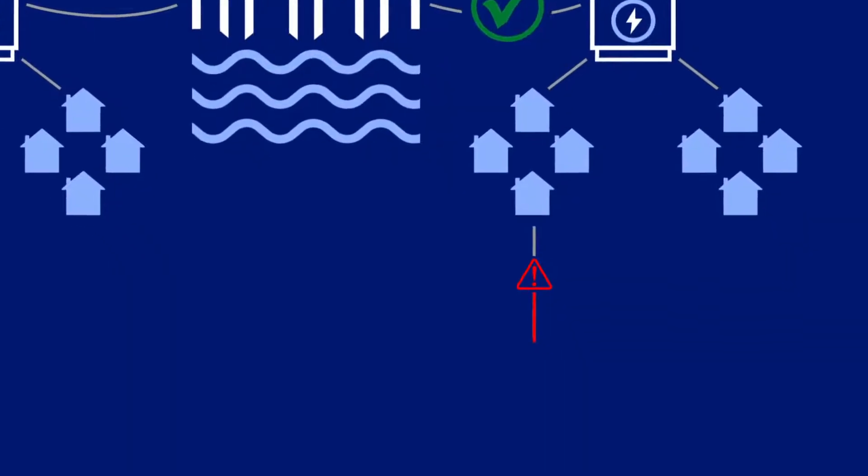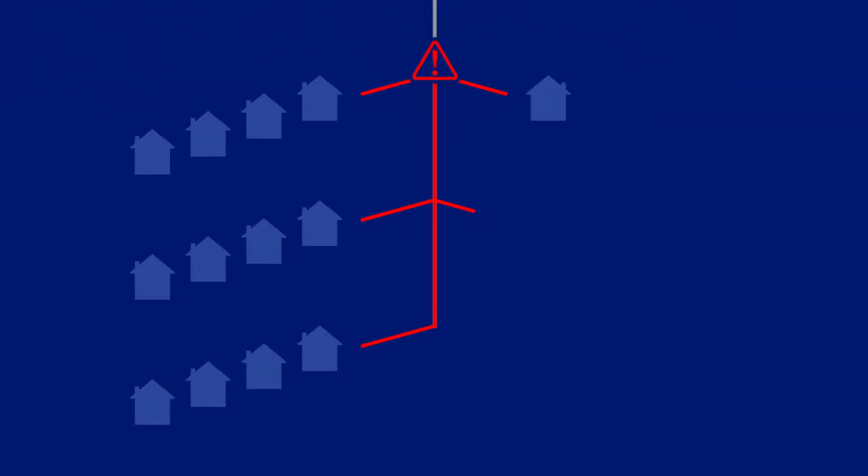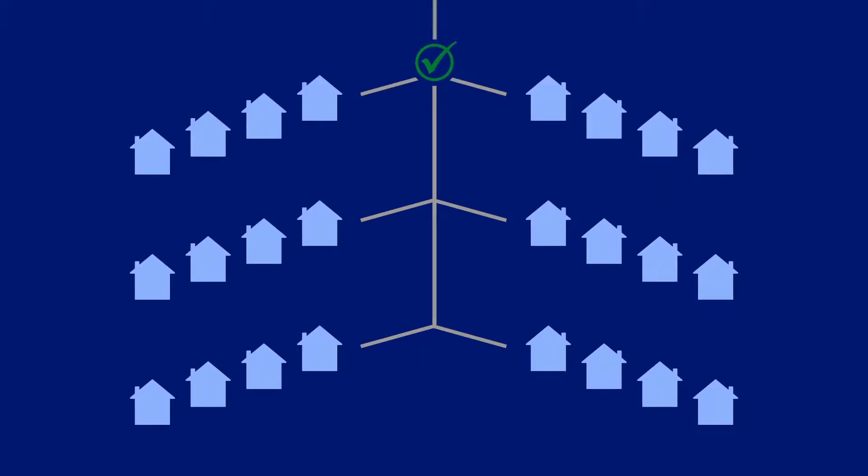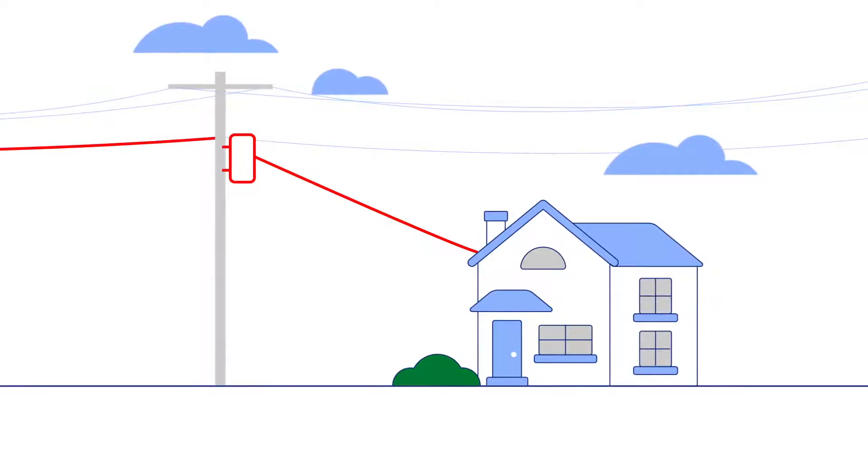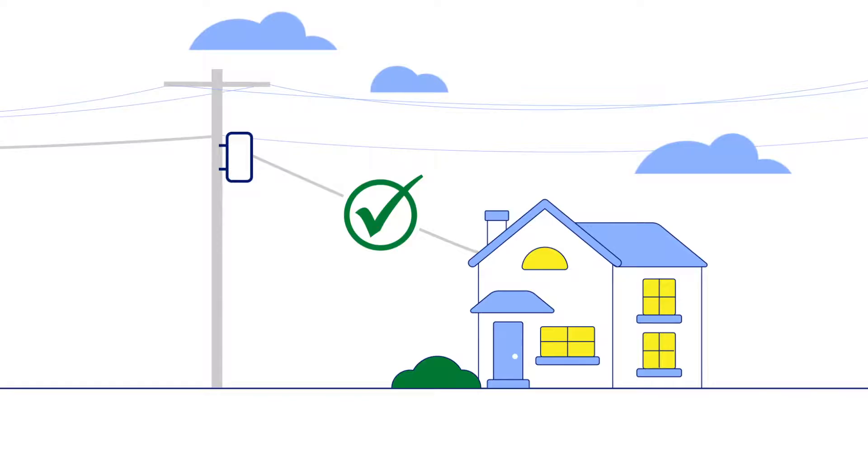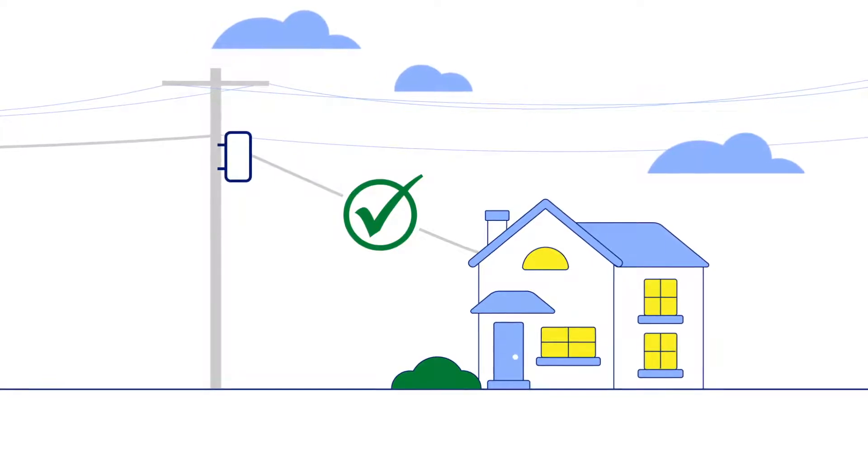We then work our way down the distribution system, along all affected circuits and spur lines that branch off into smaller communities. As outages become more localized, we make repairs to secondary service lines, transformers, and individual homes until every customer is back online.